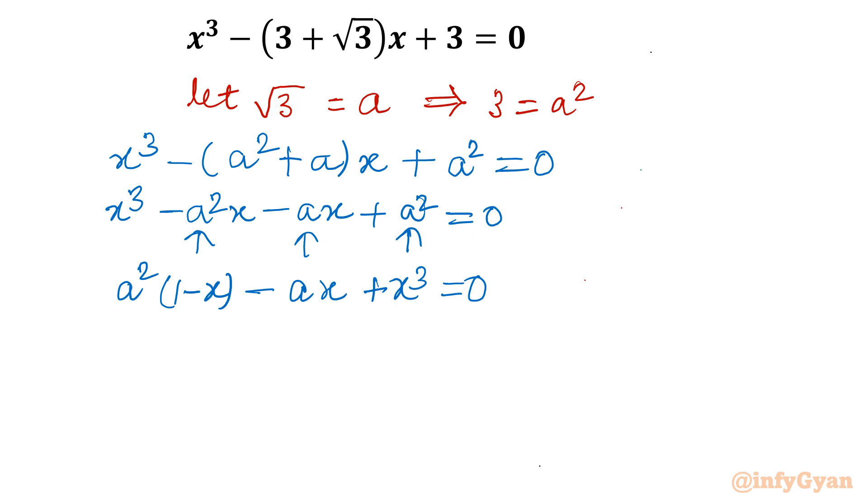Now I am going to write this as per our quadratic formula. I'm writing capital A because small a is involved. Capital A = 1 - x, capital B = -x. This is quadratic in a. And C will be x³.